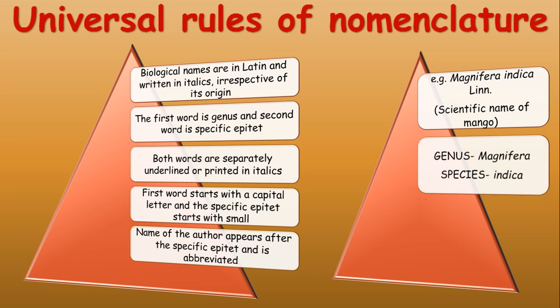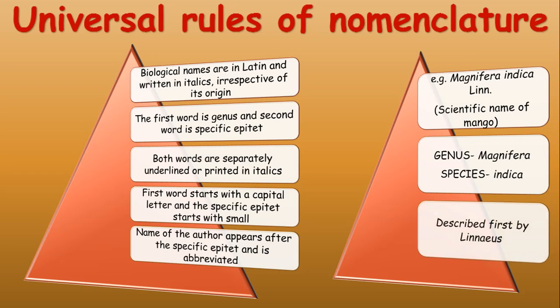For example, the scientific name of mango is Mangifera indica Linn. Mangifera is the genus and indica is the species. The first word starts with a capital M and the second word starts with a small i. It was first described by Linnaeus, hence the abbreviation Linn after the specific epithet, giving us Mangifera indica Linn.